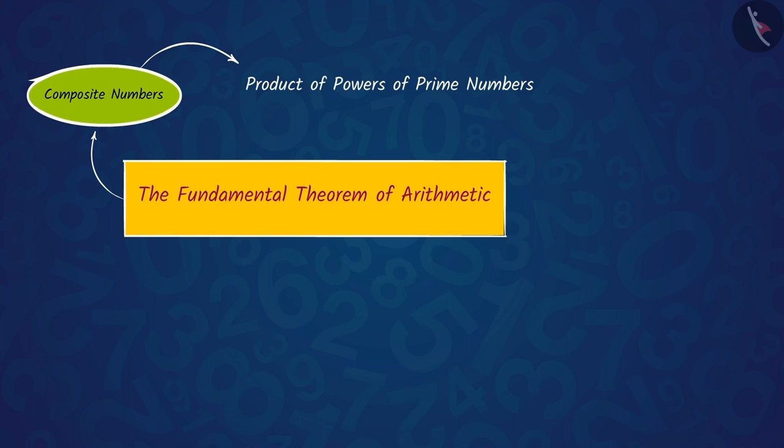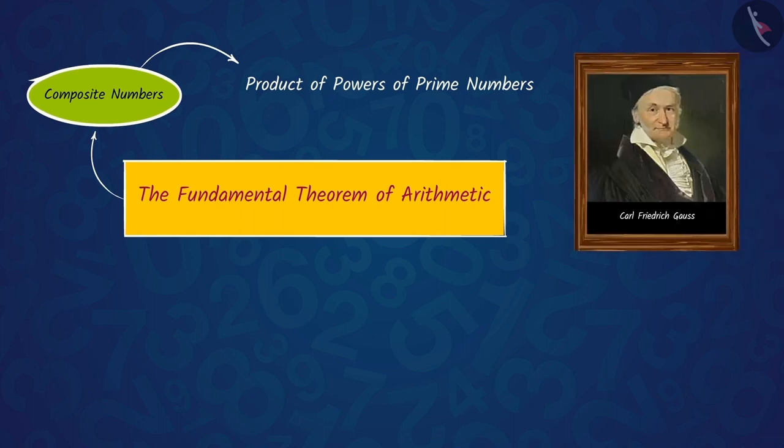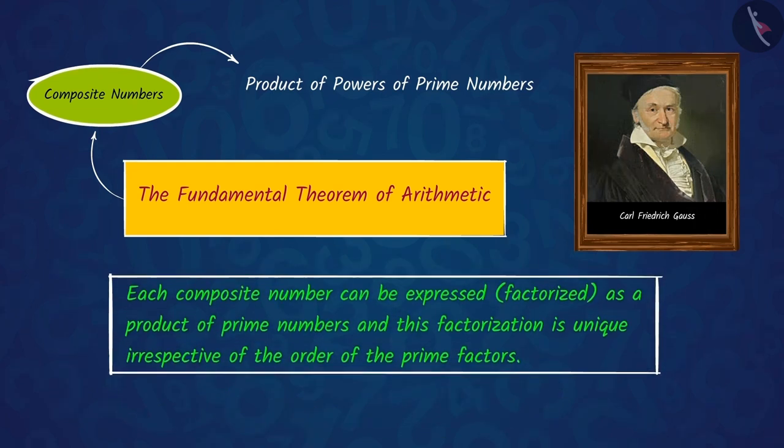It was introduced by Karl Friedrich Gauss. According to him, each composite number can be expressed or factorized as a product of prime numbers, and this factorization is unique irrespective of the order of the prime factors.